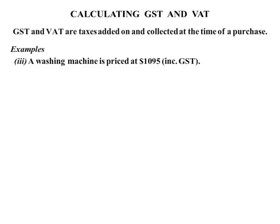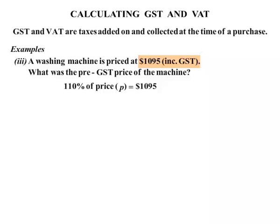Example 3: A washing machine is priced at $1095 and this includes GST. We're asked what was the pre-GST price of the machine? The $1095 includes GST, so in other words 110% of the price, which we'll call P because we don't know the original price. So 110% of P equals $1095.